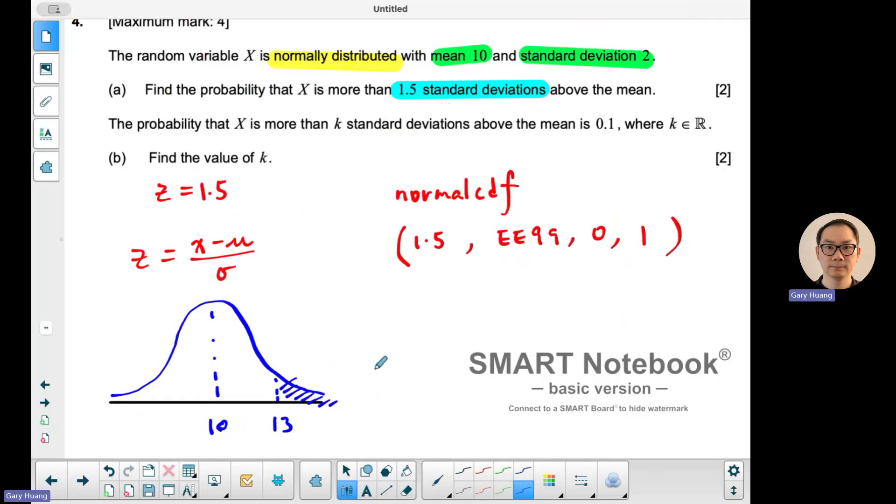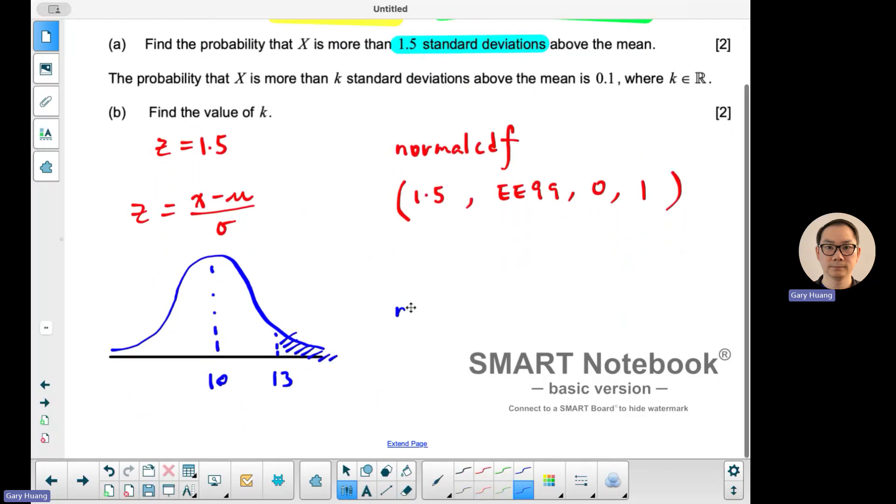So another way of doing this is you do normal cdf, you do 13 to positive infinity, but then you have to use the mean of 10 and standard deviation of 2.